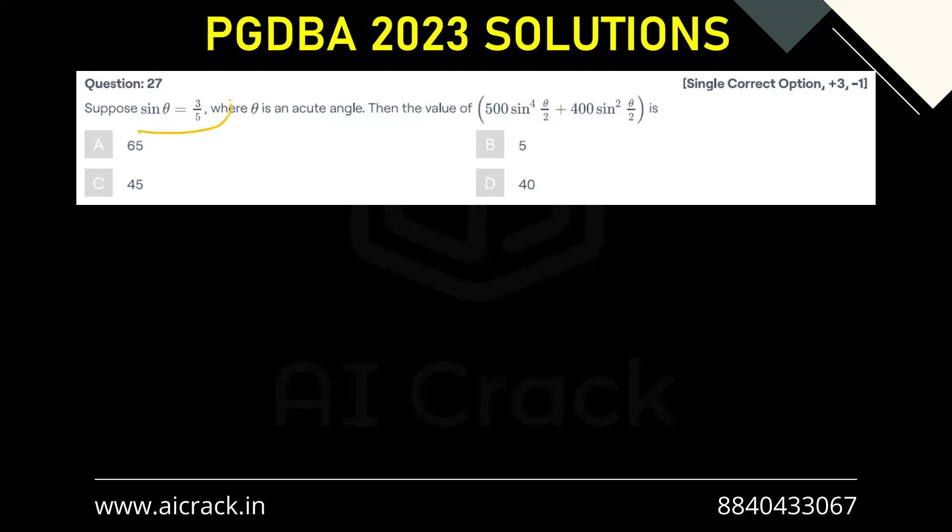So this is a fairly simple question. We have been given the sine theta value and we have to find out this particular value which we have to start with sine theta by 2 only. So from this value we have to find out the value of sine theta by 2. So let's do that.